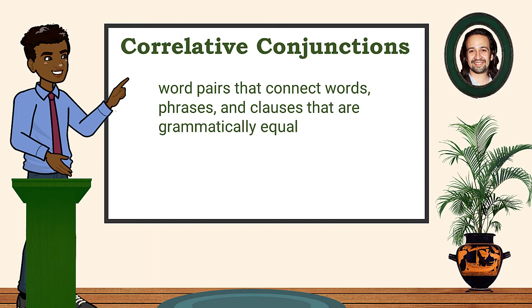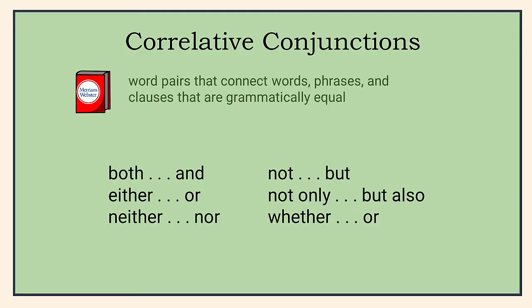Correlative conjunctions provide some special challenges in terms of parallelism, so let's look at them in some depth. These conjunctions come in pairs and connect words, phrases, and clauses that are grammatically equal. Here's a list of most of them. Take a few moments to read them aloud. They can be a little tricky because most of the pairs are composed of words that can be other parts of speech.